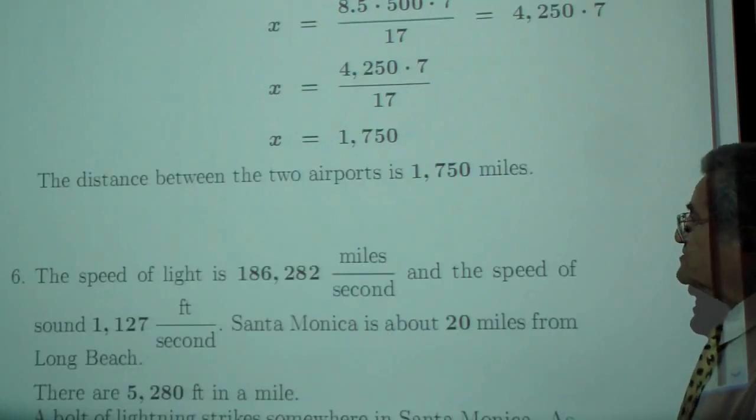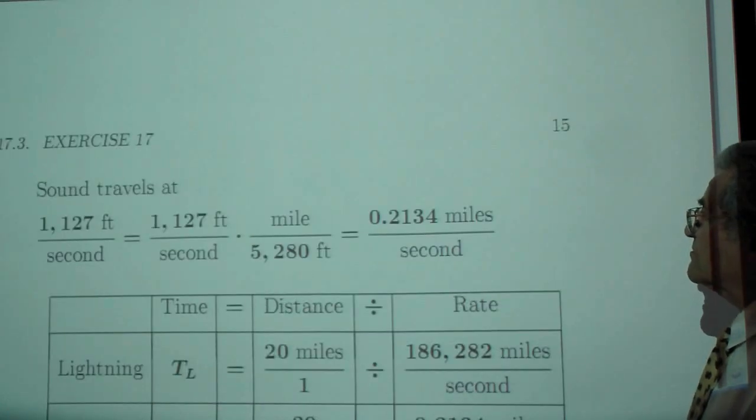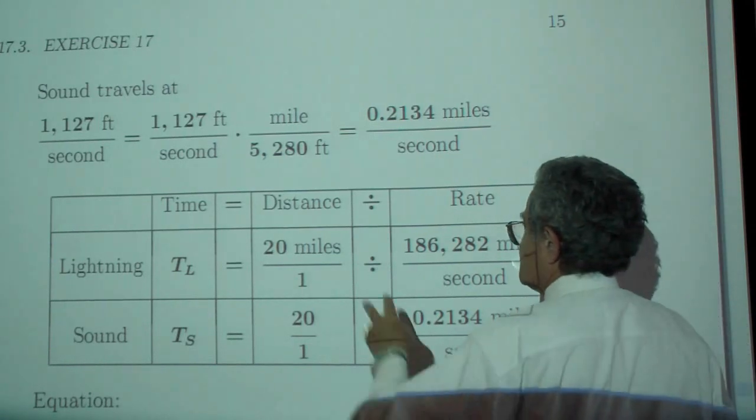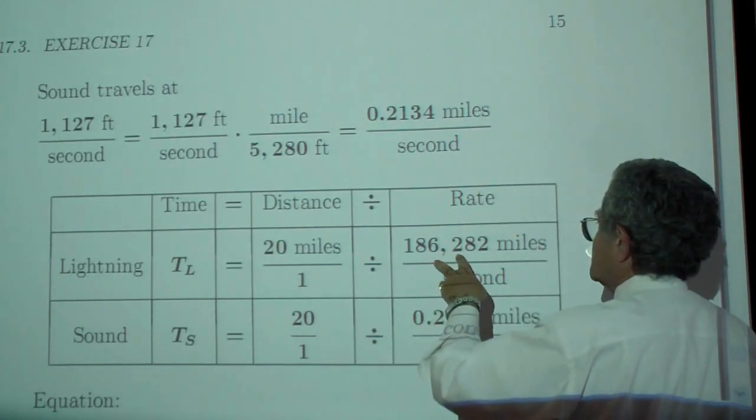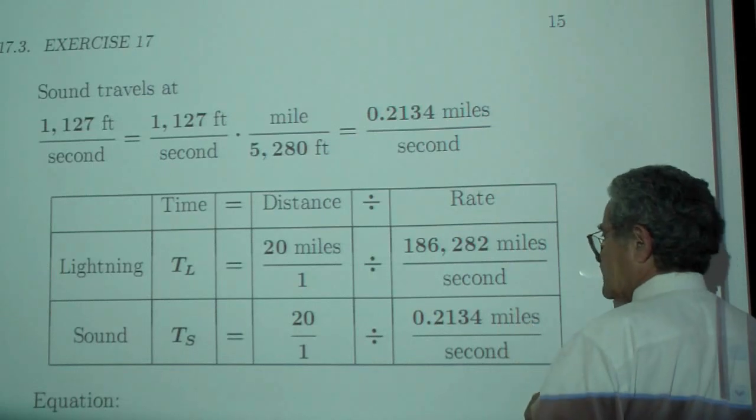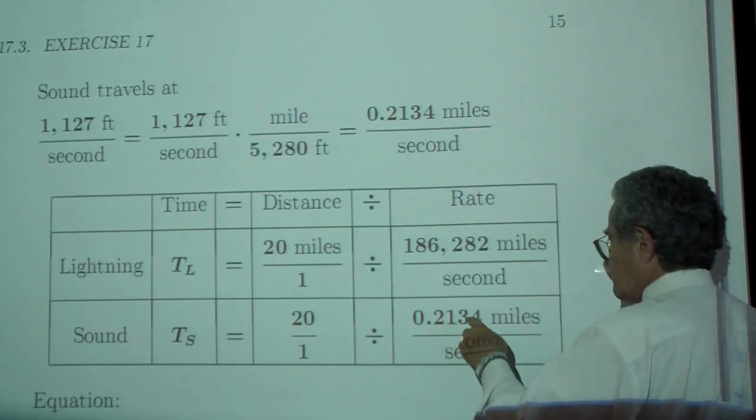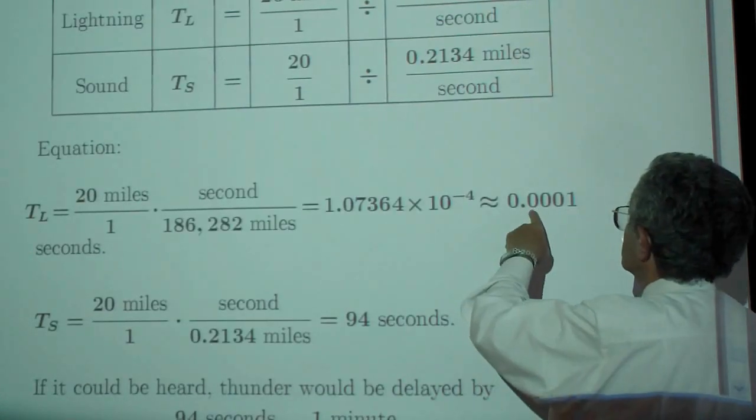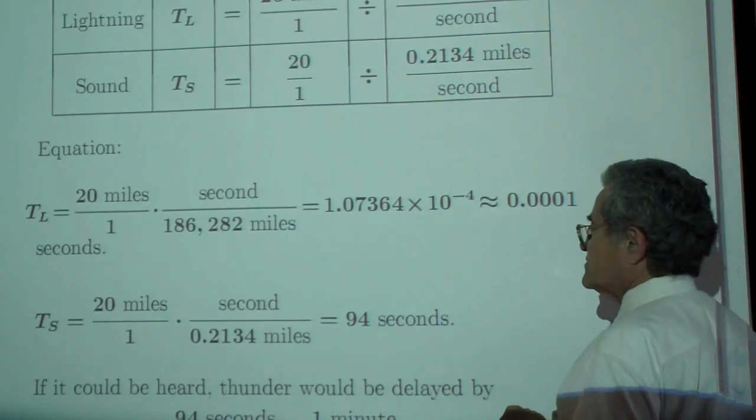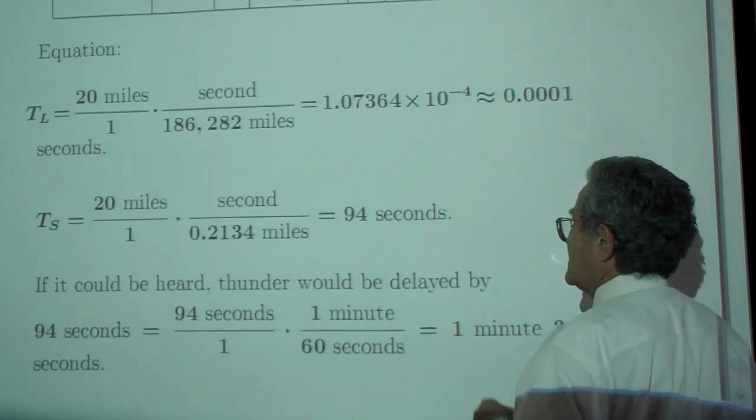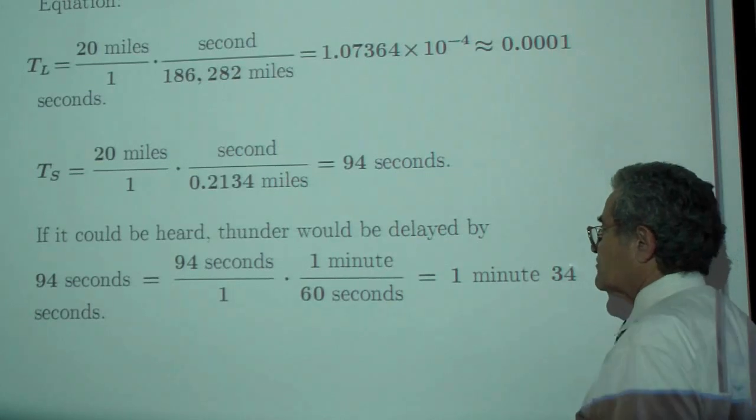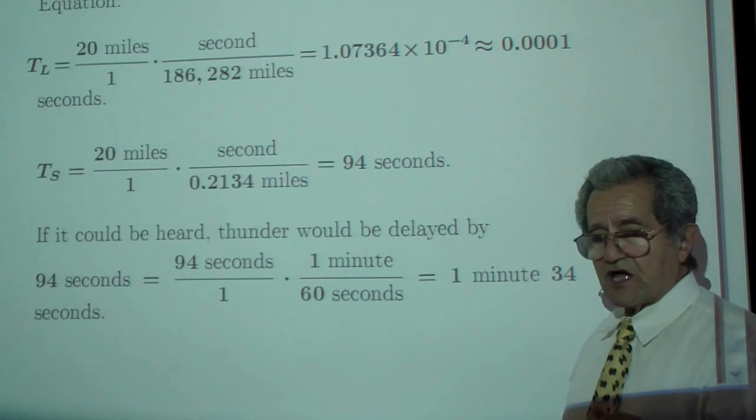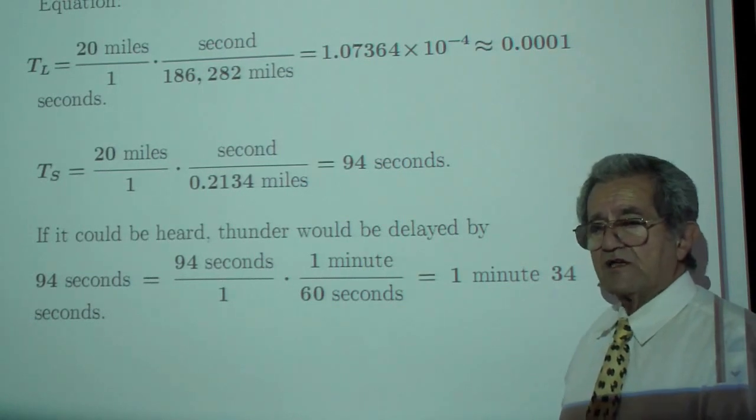And then finally, the speed problem. Sound travels like we did before. The lightning is 20 miles and 186,282 miles per second. Sound is 0.2134 miles per second. The time is about 1 ten-thousandth of a second and the time is about 94 seconds, which is 1 minute and 34 seconds. So one minute after lightning strikes in Santa Monica, you will hear the sound in Long Beach.